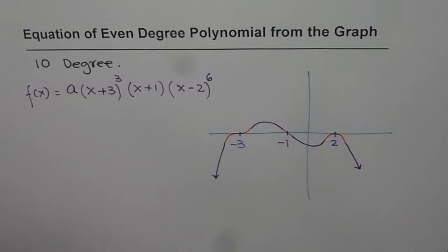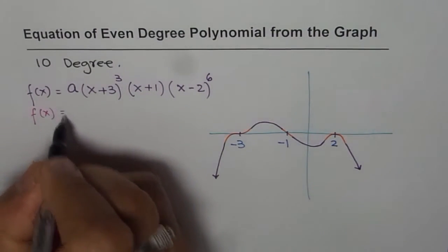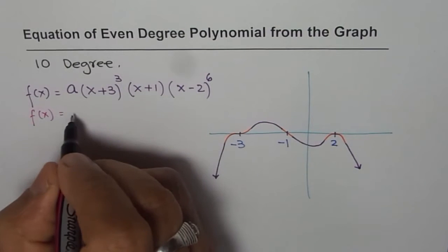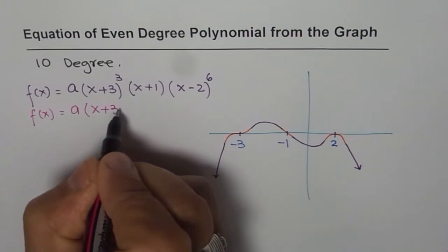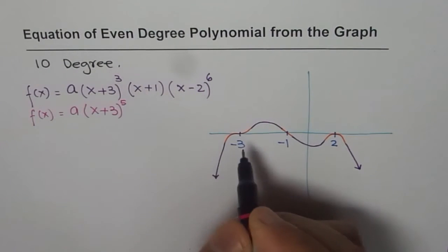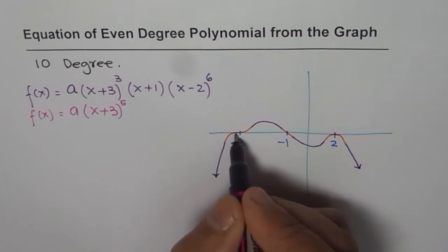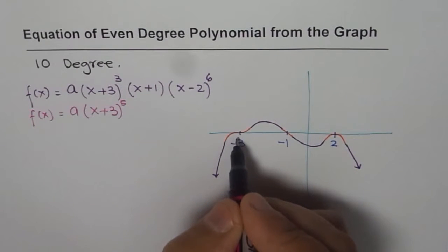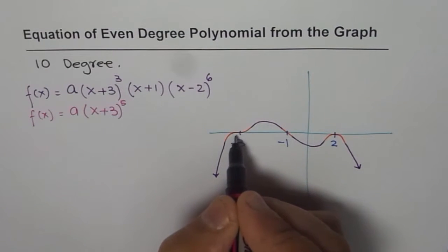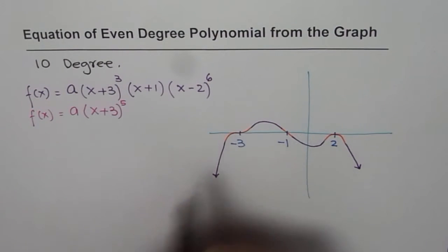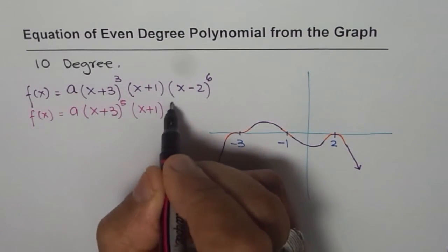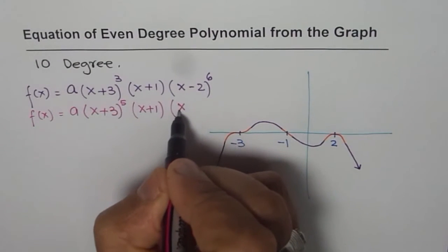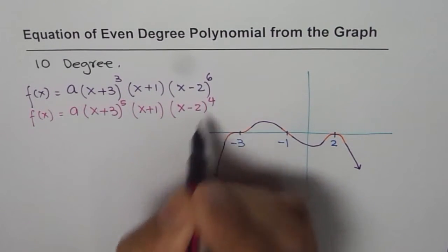The other could be that we could have the first 0 of degree 5, for example. So we say a times x plus 3, degree 5. Two more. Because this is odd degree. It goes like that. So at this point, we have a tangent which is horizontal. The linear will always be linear. And now, so 5 plus 1 is 6, and then this could be of degree 4. So x minus 2, degree 4. That could be a possible equation also.